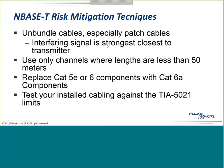Ways to reduce the potential for alien crosstalk: unbundle the cables, especially the patch cables — the signal is strongest right out of the NIC and weakest and most attenuated at the far end. Only use channels where lengths are less than 50 meters, so we don't have a chance to generate that noise. Replace some 5E and 6 components with 6A components — use 6A patch cords, use 6A jacks to reduce crosstalk. Test it: within the latest revision of our firmware you'll see a test for 2.5 and 5GBASE-T per TI-5021.